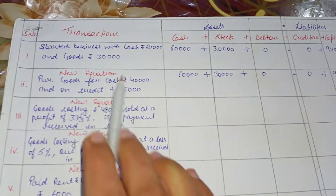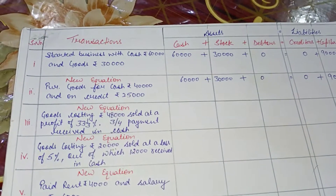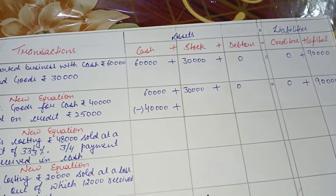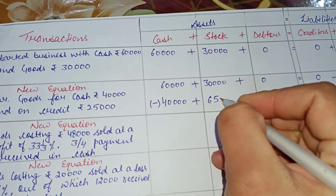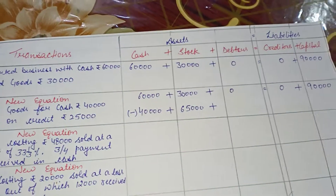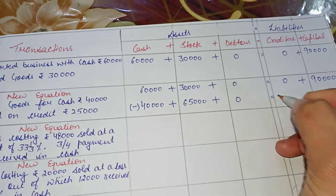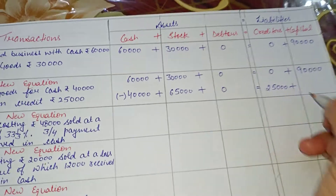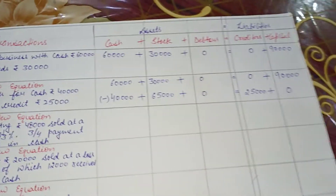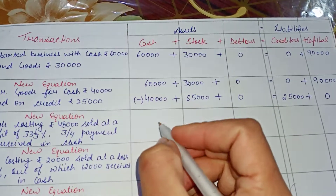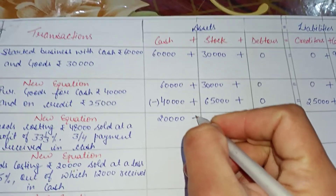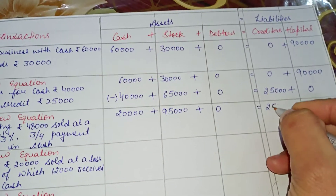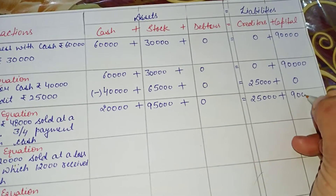The second transaction is: purchase goods for cash and on credit. We buy goods for cash of 40,000, so cash becomes minus 40,000, giving us 20,000. Stock in total: 40,000 plus 25,000 equals 65,000. Debtors remain zero as we have no sale. Creditors: since we have a credit purchase of 25,000, creditors become 25,000. Capital remains 90,000. So the new equation: cash 20,000 plus stock 65,000 plus debtors 0 equals creditors 25,000 plus capital 90,000.